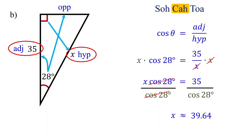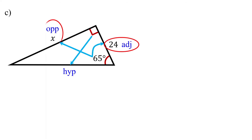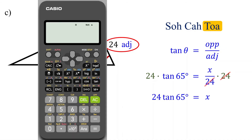Now it is your turn — please pause the video and give it a try. Label the sides: opposite the right angle is the hypotenuse; opposite the 65-degree angle is the opposite side; the remaining side is the adjacent side. The adjacent side is given and we are asked to find the opposite side. According to SOHCAHTOA, it is the tangent function that relates these two sides. So tangent of 65 degrees equals x over 24. Multiply both sides by 24 to isolate x. Using a calculator, 24 times tangent of 65 degrees is approximately equal to 51.47.